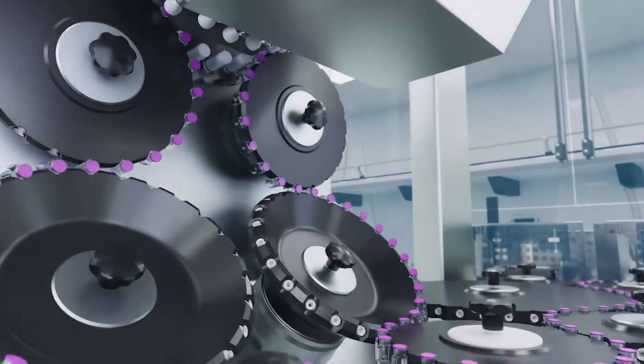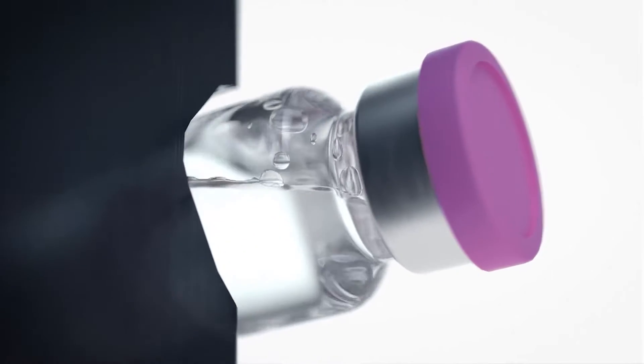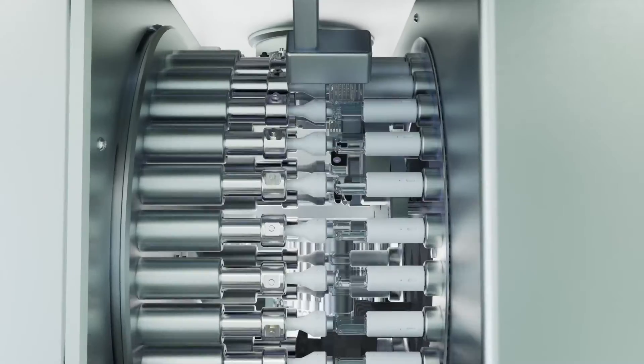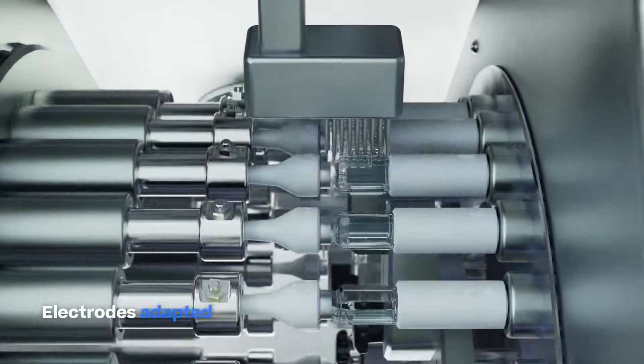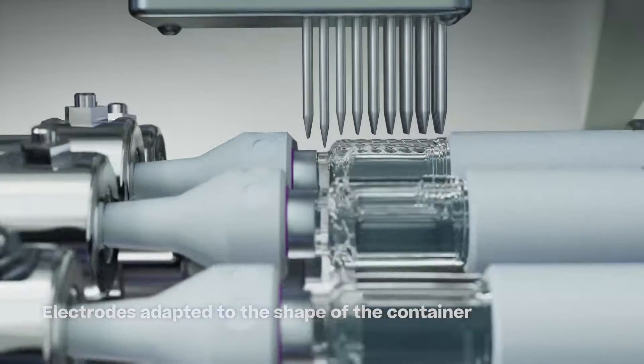As each container is tilted to 90 degrees and rotated a full 360 degrees in front of the electrodes, this process ensures the inner sidewall is thoroughly wetted for a reliable high-voltage detection of leaks in the sidewall.